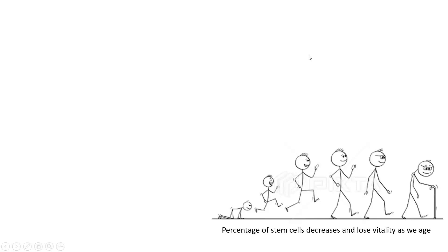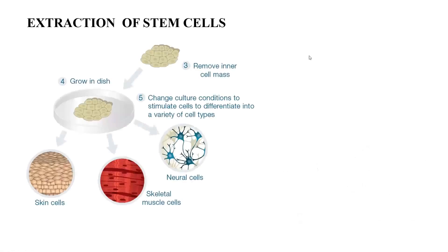You can see this picture showing how the percentage of stem cells decreases and loses vitality as we age. Now, how the extraction goes — after the cell divides, it goes to two cells, four, eight, and you can see embryonic stem cells in the embryo. As the embryo goes, they start dividing and after division become blastocysts.